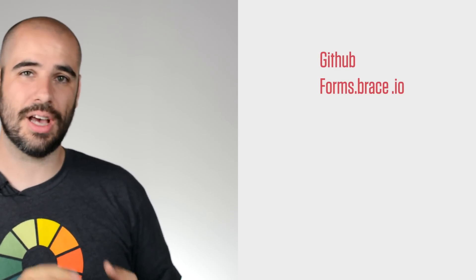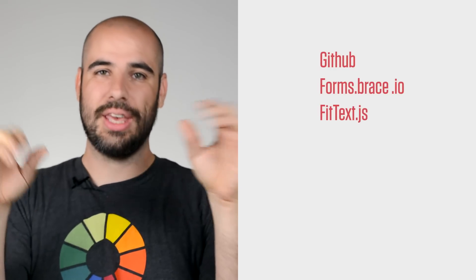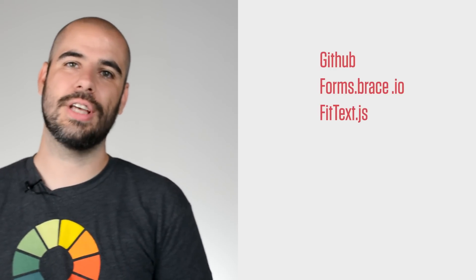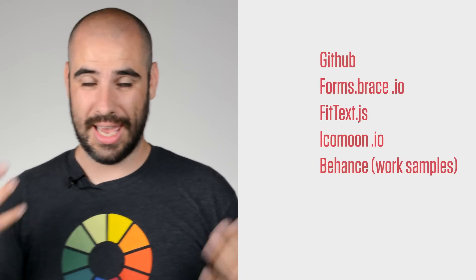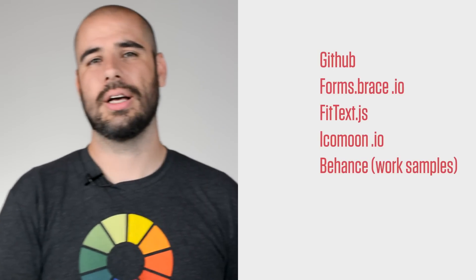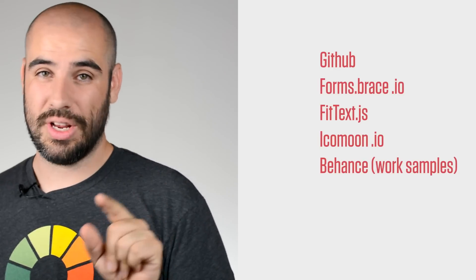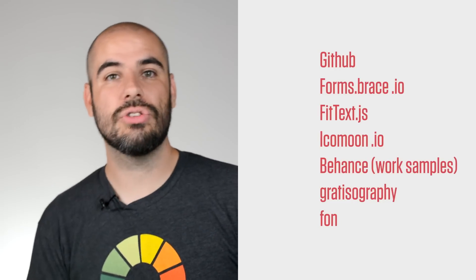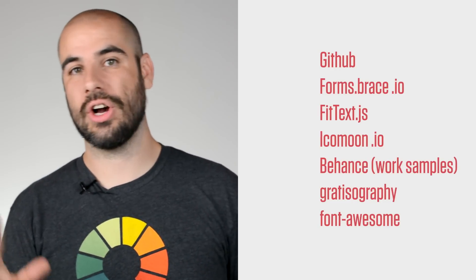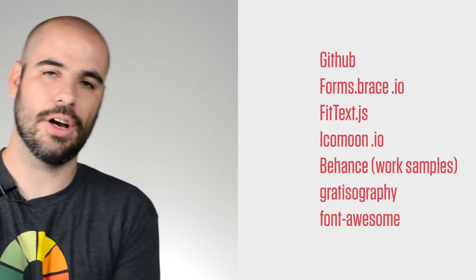Here's a quick list of all the services we used. Number one, GitHub. We used forms.brace.io to send our forms. We used FitText to control the responsiveness of our larger text and headers. We used IcoMoon to create our own icon fonts. We used Behance to find work samples. Credits for those pieces can be found in the README of every download of the artist theme. We used Font Awesome heavily and also Gratisography for free photography — that's where our beautiful header image came from. We also used Trello for project organization.